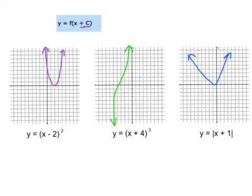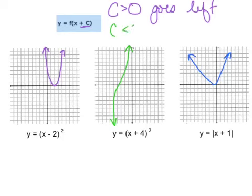will be something like this. How did our graphs change? It shifted left and right. If c is greater than 0 or a positive number, it goes left. And when c was less than 0 or a negative number, it goes right.